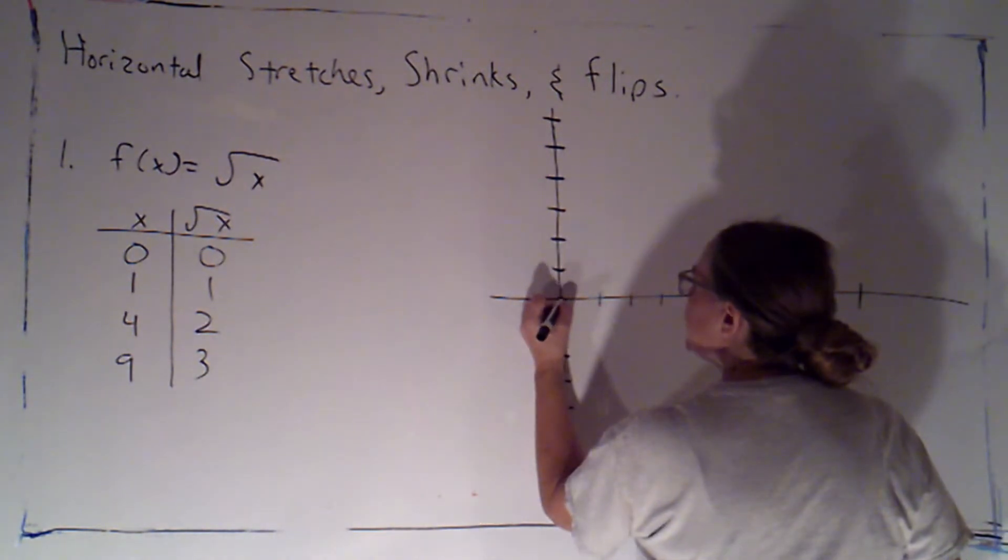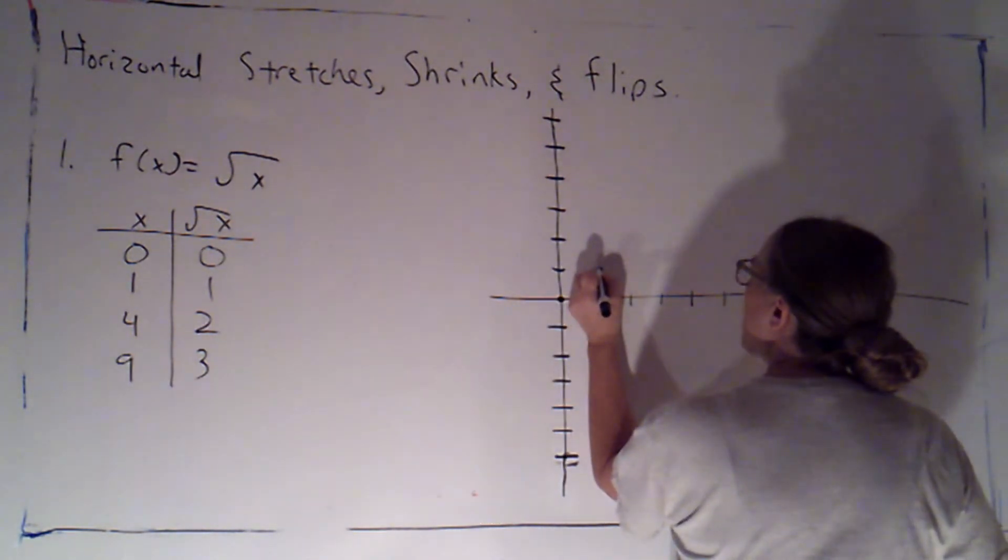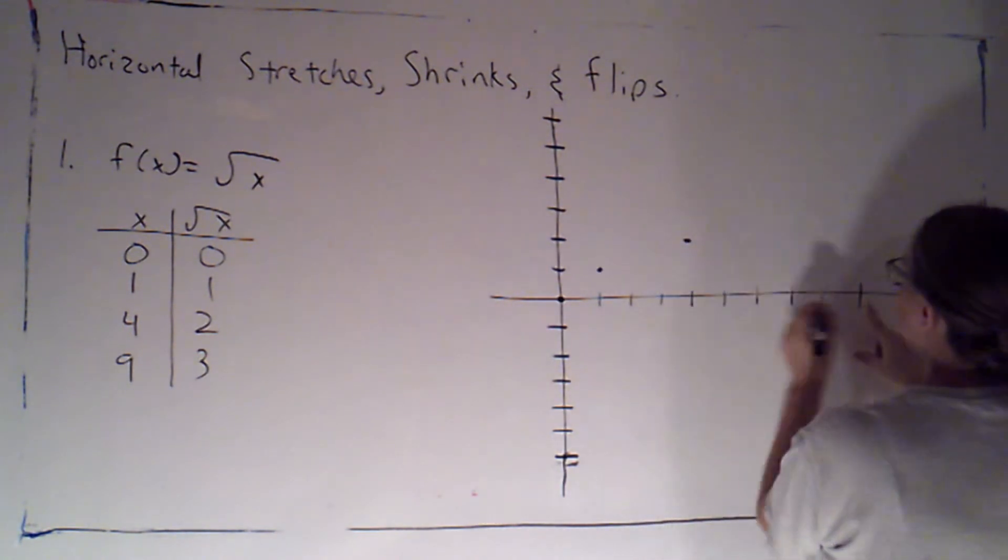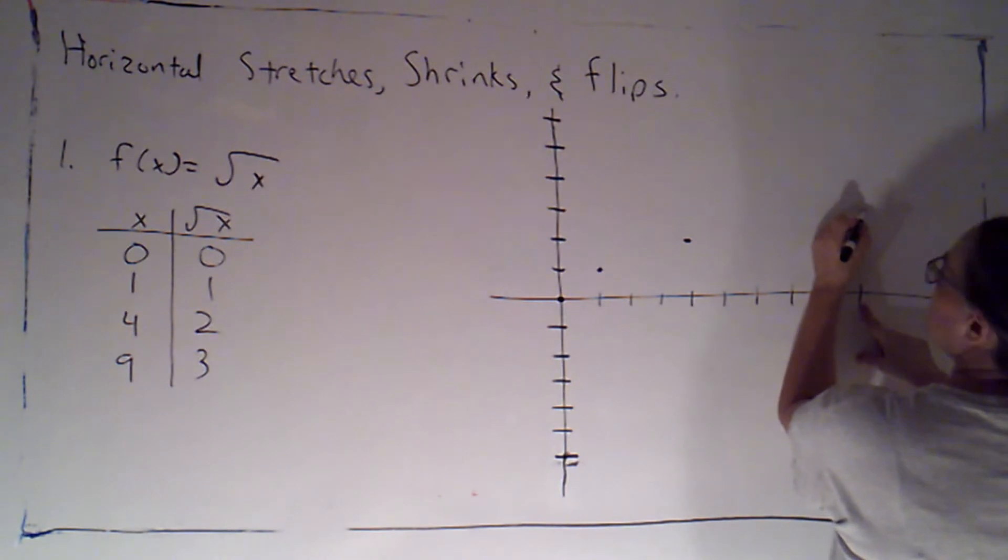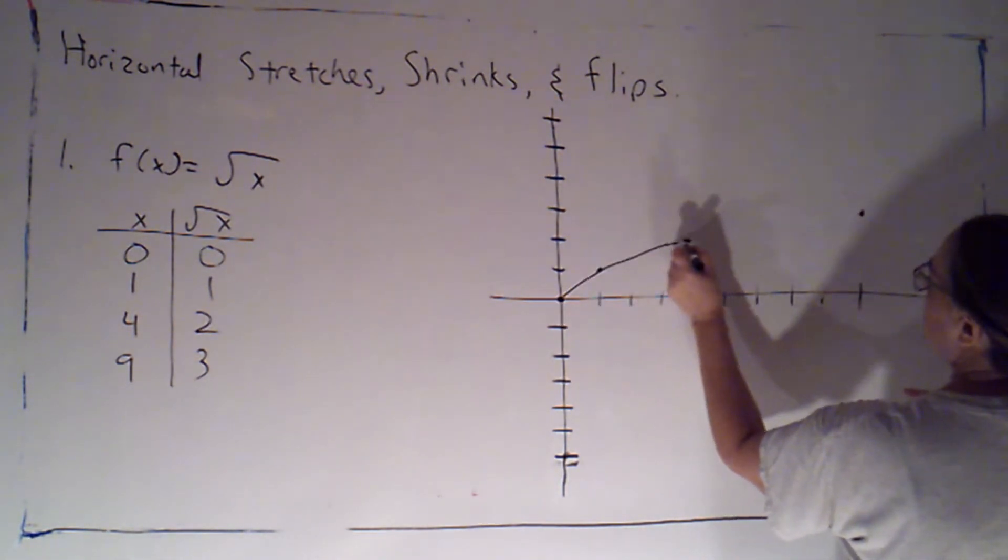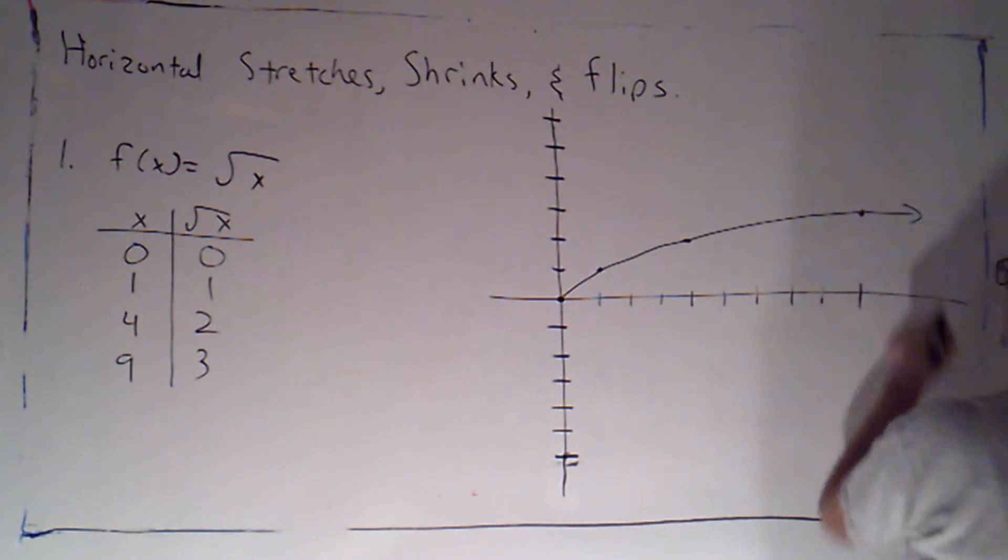So if I plot those points, here's (0, 0), (1, 1), (4, 2), and (9, 3). All right, so there's that function.